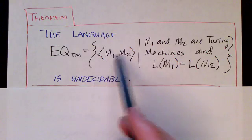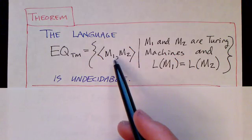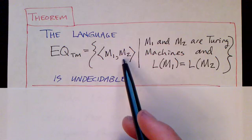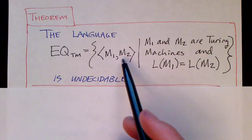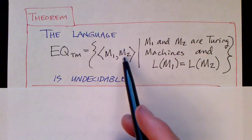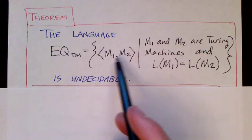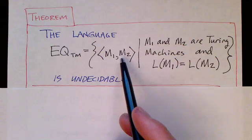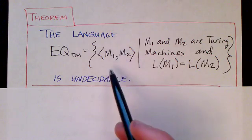Given two Turing machines, you could start running them in parallel and try all possible inputs. If you ever found an input that was accepted by one and rejected by another, you would have proof that they're not equivalent. But if every string is accepted and you can't find any that are rejected, then you might go on forever. That's why this language is undecidable.